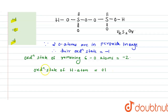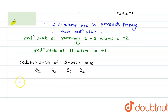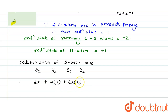Let the oxidation state of the sulfur atom equal x. So we set up the equation: 2x (for S₂) plus 2×(+1) for H₂, plus 6×(−2) for the six oxygens, plus 2×(−1) for the two peroxide oxygens, equals zero.